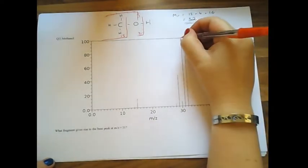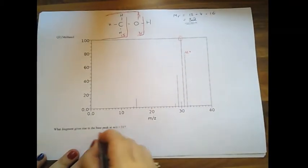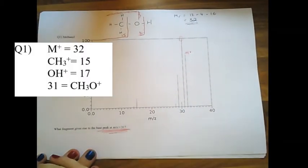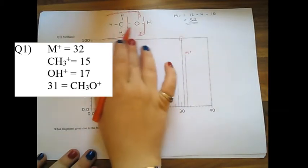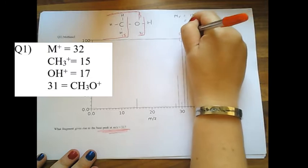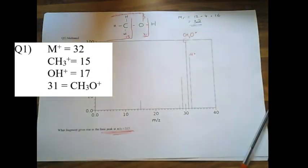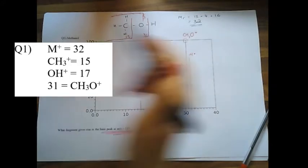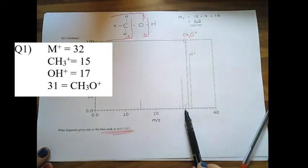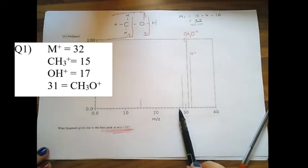This 31 is the most stable peak. And actually the question here says which fragment gives rise to the base peak at 31. It's going to be this section here. So it's going to be the CH3O plus. So it's the molecule minus a hydrogen. Then the consequent one, so that's going to be minus another hydrogen, minus another hydrogen, minus another hydrogen.